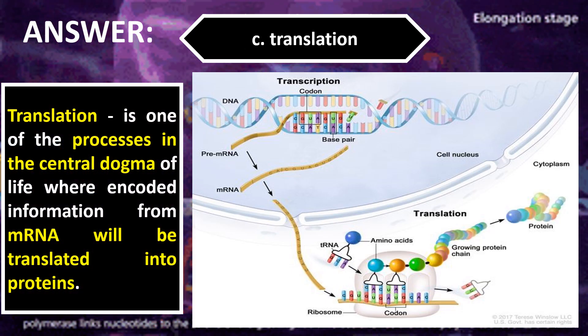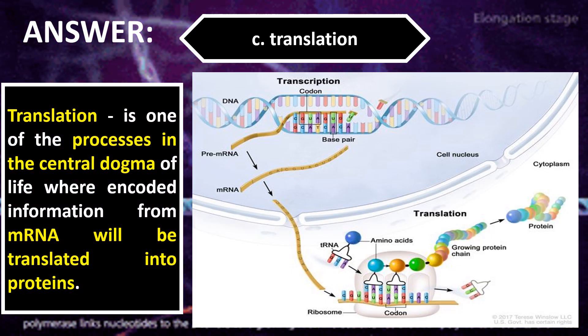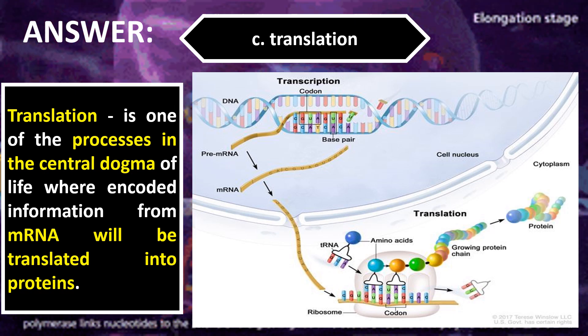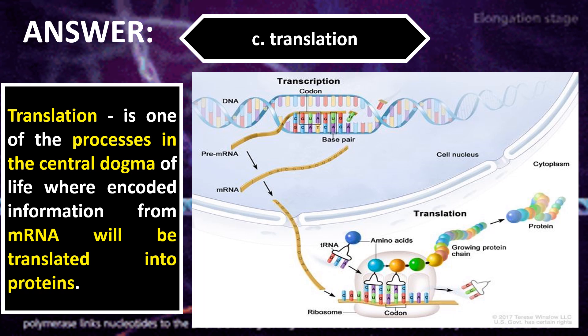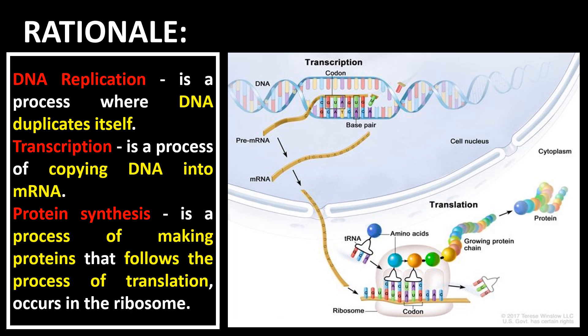The correct answer is letter C, Translation. Translation is one of the processes in the central dogma of life where encoded information from mRNA will be translated into proteins. DNA replication is a process where DNA duplicates itself. Transcription is a process of copying DNA into mRNA. Protein synthesis is the process of making proteins that follows translation and occurs in the ribosome.